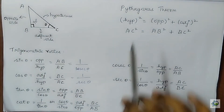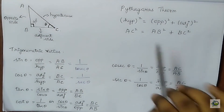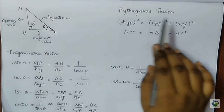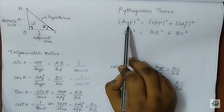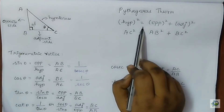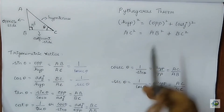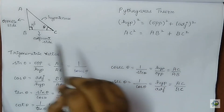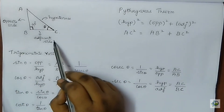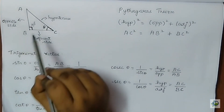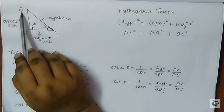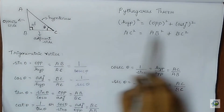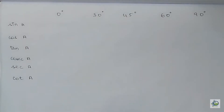Another very important theorem to start with is the Pythagoras theorem. It states that the hypotenuse squared is equal to the sum of the squares of the other two sides — the opposite side and the adjacent side. So according to this triangle, AC squared equals AB squared plus BC squared.